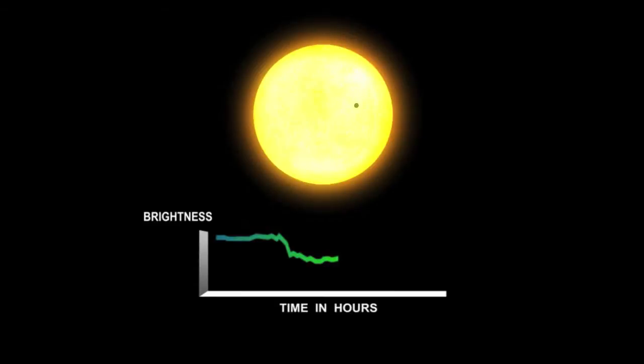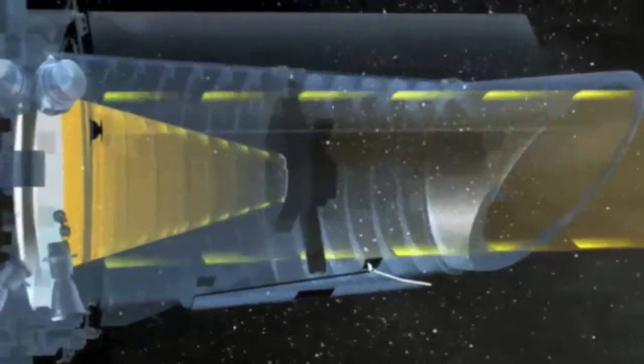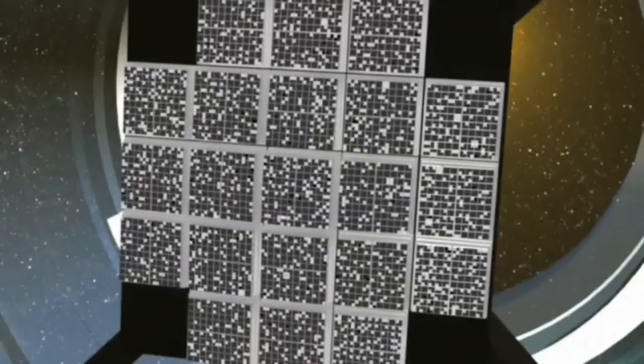Kepler detects these planets by accurately measuring tiny dips in the brightness of a star as a planet moves in front of it to within 10 parts per million. Since a planet the size of the Earth is so much smaller than the size of a star, these variations are extremely tiny and require sensitive instruments to record.